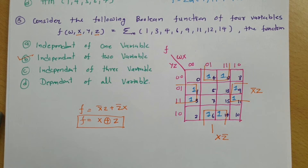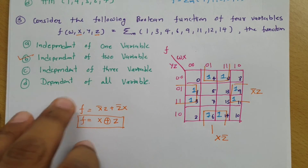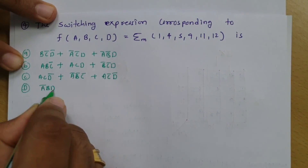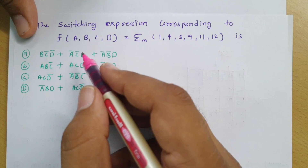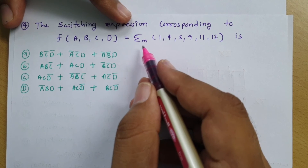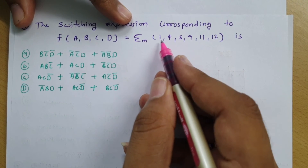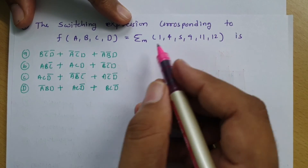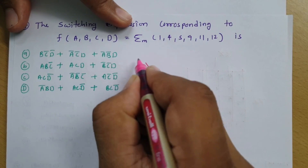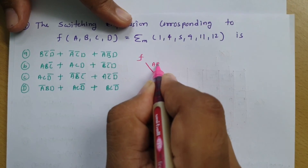So we can say f is independent of two variables — W and Y. The correct option is that it is independent of two variables. Now let me give you one more question to further improve your understanding. In this question, function f is a function of ABCD.